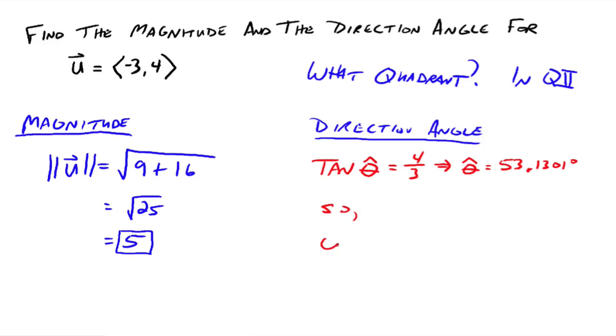So theta is equal to 180 degrees minus 53.1301 degrees. Everybody understand why we're subtracting it from 180 degrees? Because we're in quadrant two. So subtract the reference angle from 180 and you're going to get 126.8699 degrees. And that is your direction angle. Everybody see how I use the reference angle idea there?